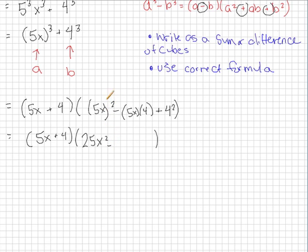You can only distribute an exponent like that if you have a multiplication or division going on, by the way. That does not count for addition or subtraction. 5X times 4 is, we have a minus sign there, so that would be minus 20X, plus 4 squared is 16.